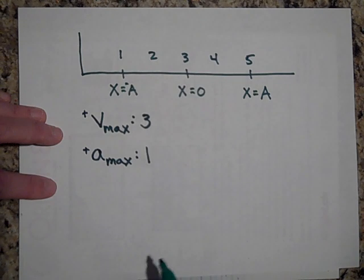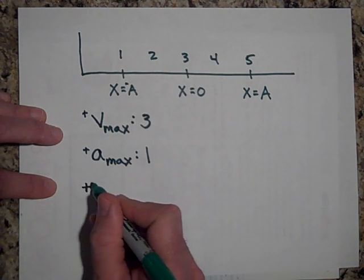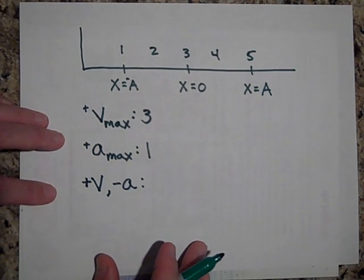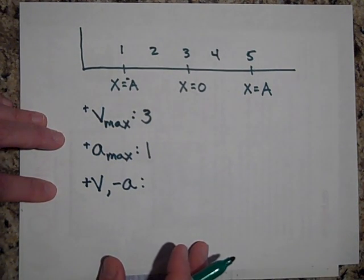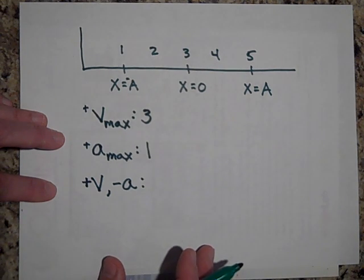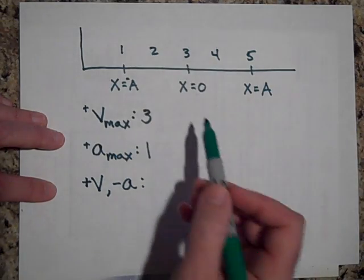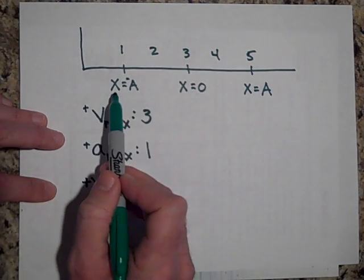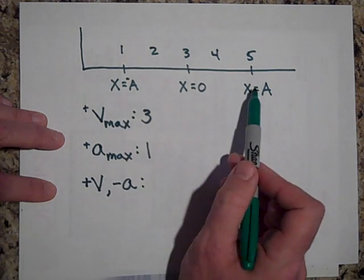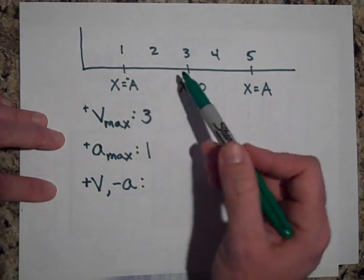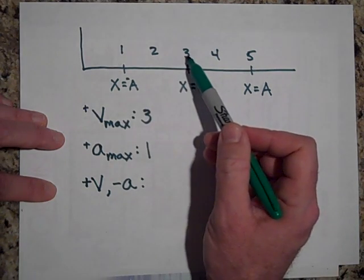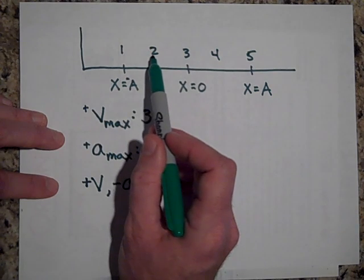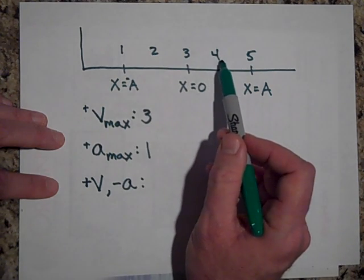Can you tell me in which region the object is going to have a positive velocity but a negative acceleration? To have a positive V, it needs to be moving in the positive direction, so it can't be at the endpoints because it's not moving there. It doesn't have any acceleration at 3. In region 1, it only has positive acceleration. In region 4, it only has negative acceleration — so the answer is region 4. The spring is pulling it back toward the equilibrium.